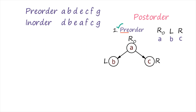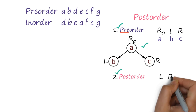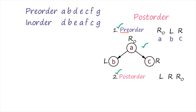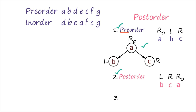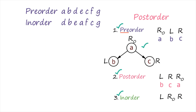That is rule number one. Post-order traversal means left, right, root — so the result would be B, C, and A. And what is in-order traversal of this same tree? In-order traversal means left, root, and right — so B, A, and C.